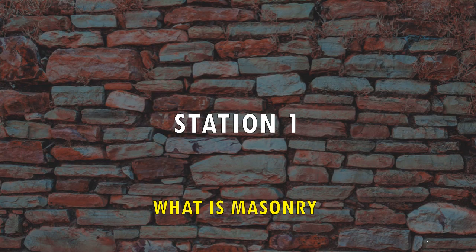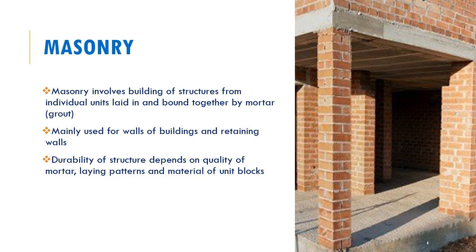Starting off with station 1: what is masonry? As you can see in the photo, this is a column and you've got your exterior wall of a particular building, and you see these individual units that are stacked together and bound by a thin line of mortar. So that's basically how a masonry structure looks like. It's composed of individual units that are laid on top of one another or next to each other, and the bond between these individual units is a thin film of mortar.